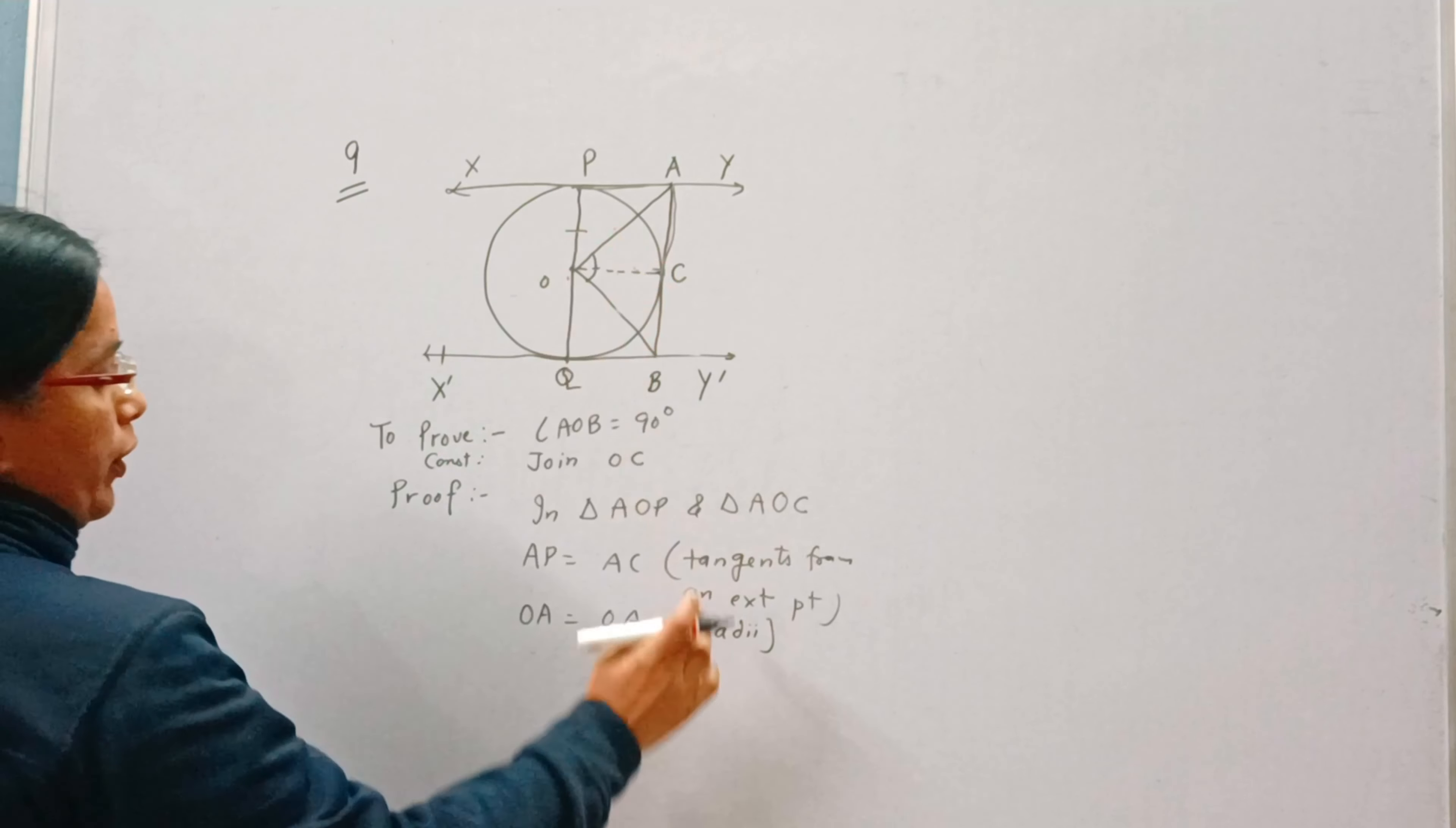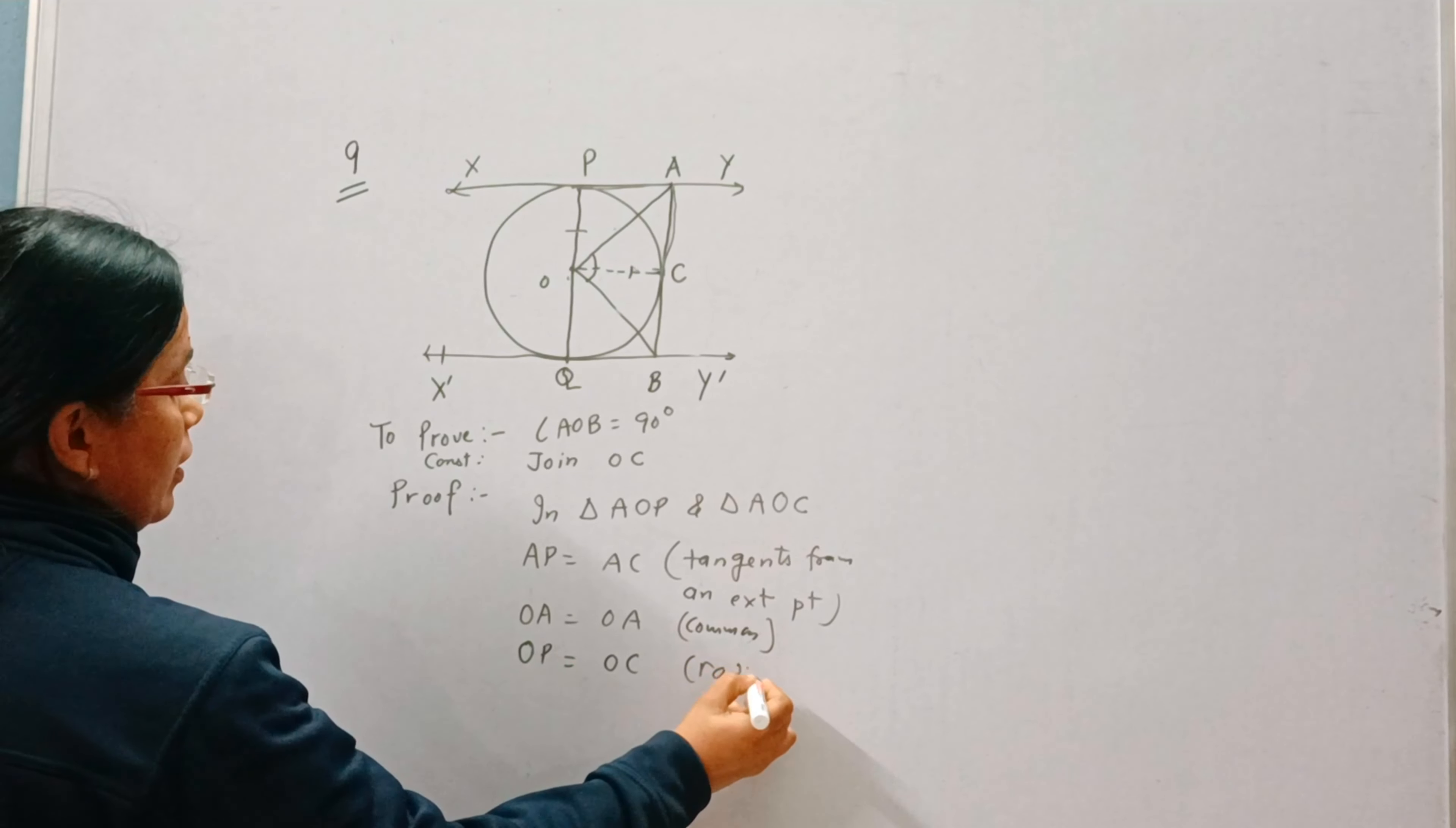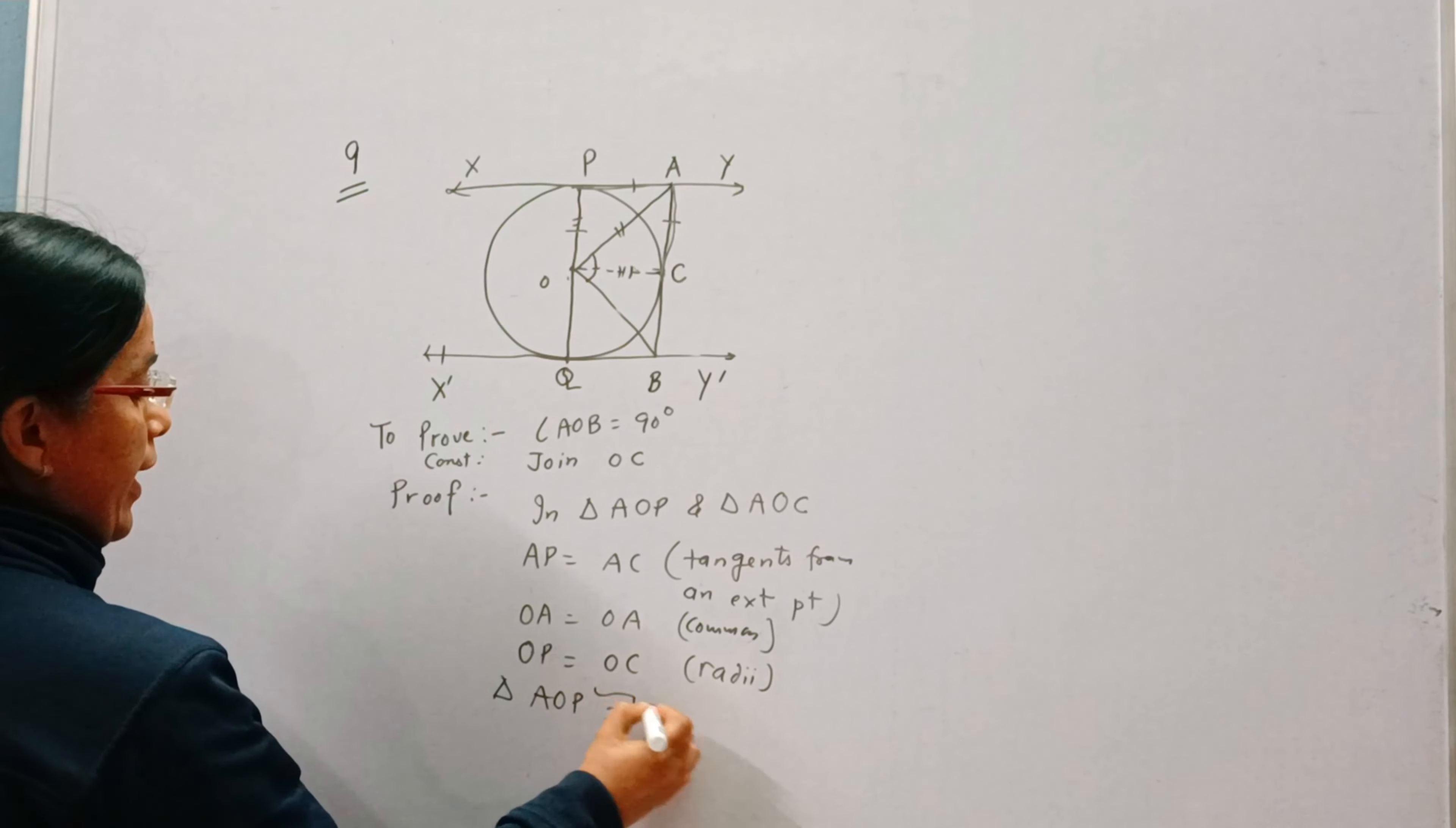And oa is common, op is equal to oc, radii of the same circle. This is the radius. So ap is equal to ac, oa is common and op is equal to oc.